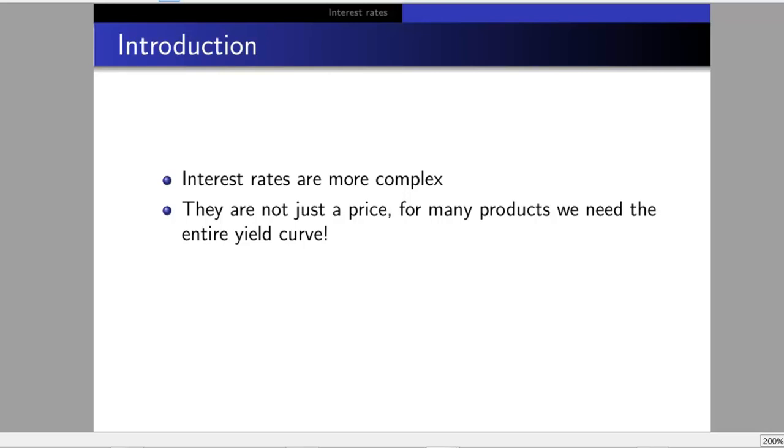The yield curve is the interest rate at different time points. If you lend someone money for two years, there's a market price for that. For five years, there's typically a higher price since your money is tied up longer. You can't describe the whole yield curve by just one number; it's a continuous set of prices.